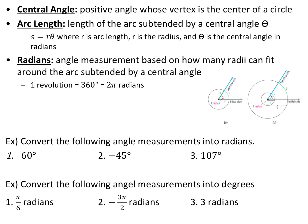We can find arc length by multiplying the radius by the central angle measured in radians. A radian is an angle measurement based on how many radii can fit around an arc subtended by a central angle. One revolution is 360 degrees, which is also two pi radians, because two pi radii can fit all the way around a circle.